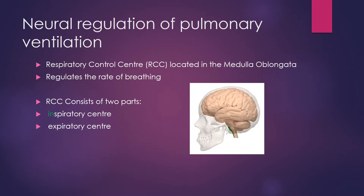Neural regulation of pulmonary ventilation. We have an area in our brain called the respiratory control center, which is responsible for regulating the rate at which we breathe. This is located in an area of the brain called the medulla oblongata. If we look at the diagram, we can see it highlighted in green — that's the part of the brain where the medulla oblongata can be found.